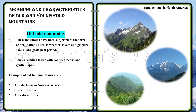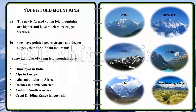Examples of old fold mountains are the Appalachians in North America, the Urals in Europe, and the Aravallis in India. The newly formed young fold mountains are higher and much more rugged. They have pointed peaks and steeper, deeper slopes than old fold mountains.